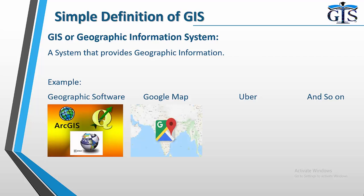Google Maps, which is known to everyone. We use Google Maps to see location-based information. We can see the map of any country, we can see the state boundary, we can see the road name, and we can find addresses by using Google Maps. So by using Google Maps we can get location-based information, and this is also an example of GIS.